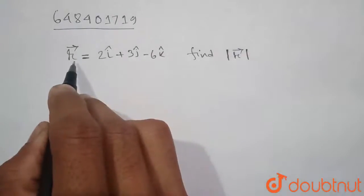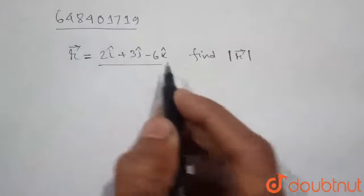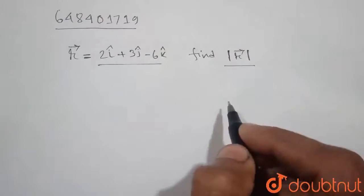Here it is given that r vector is equal to 2i cap plus 3j cap minus 6k cap. Then we need to find the modulus value of r.